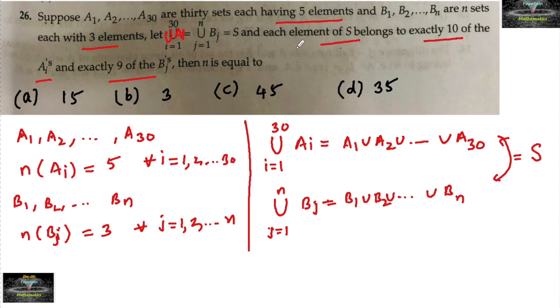And also the condition given: each element of S belongs to exactly 10 of the ai's. This means the number of elements in S is 1/10th of the total elements in all ai's. There are 30 sets, each containing 5 elements, so n(S) equals 1/10 times 30 times 5, which gives n(S) equals 15.